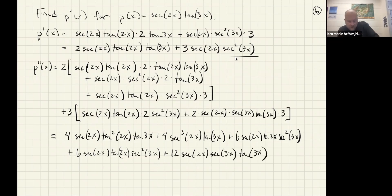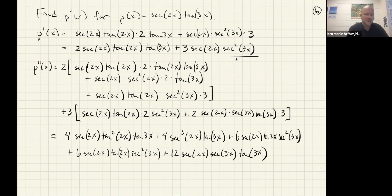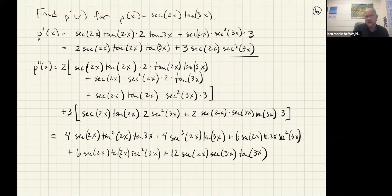Horrible looking — you can see a secant 2x comes out of the whole thing, but that doesn't make it much better. The important lesson is that when you have secants and tangents together and have to take several derivatives, it gets very very messy, especially when you have to use the chain rule at the same time. That should get us for now. I will see you all in class.